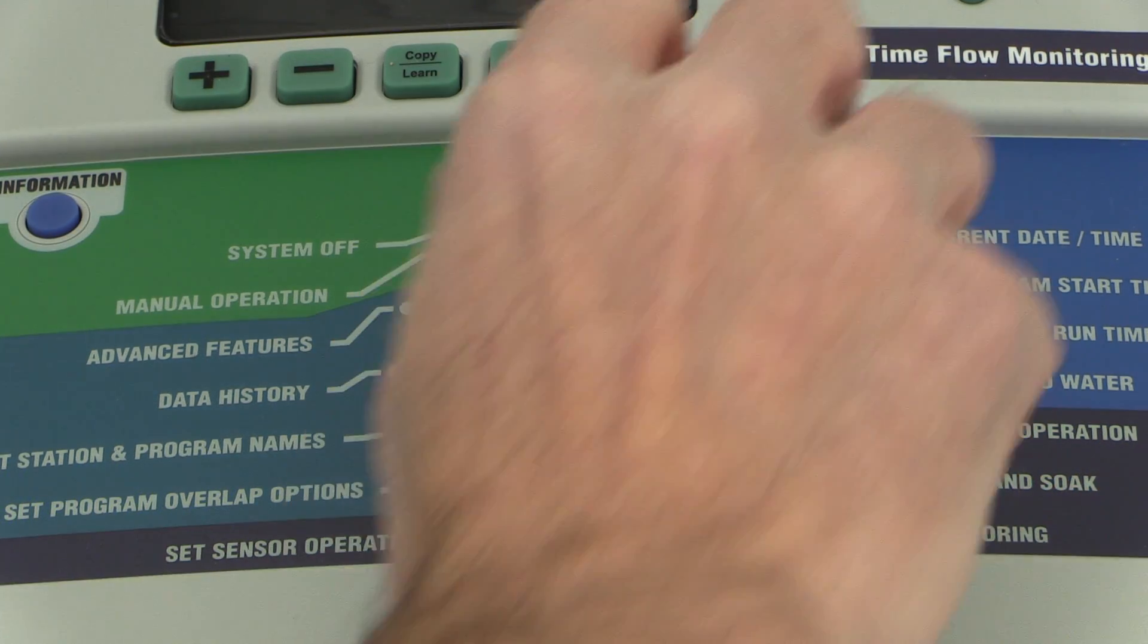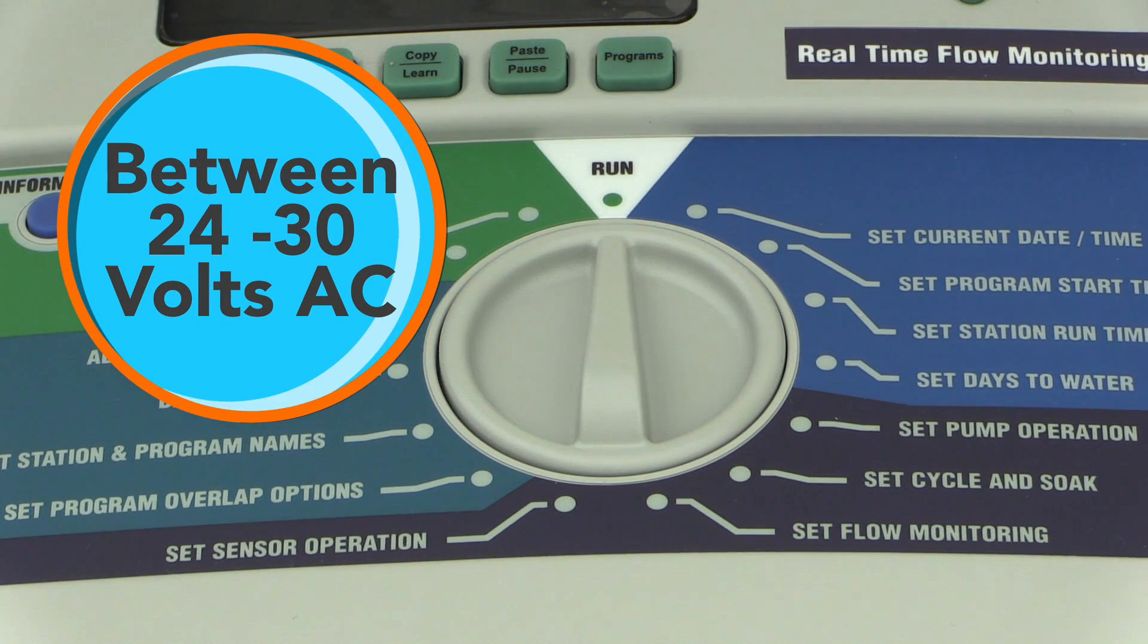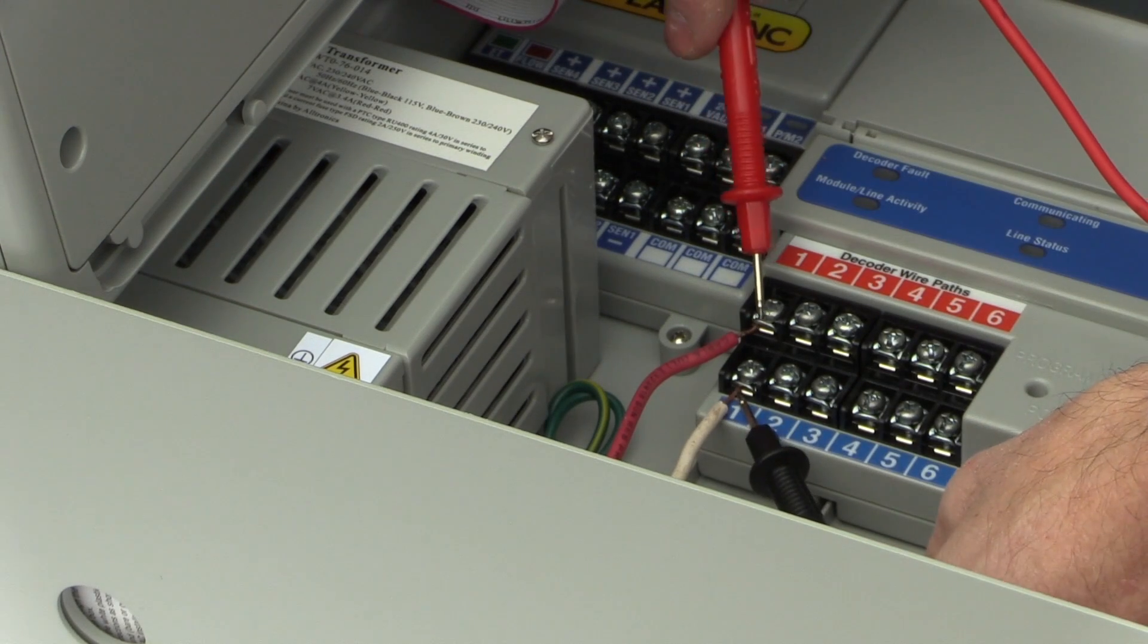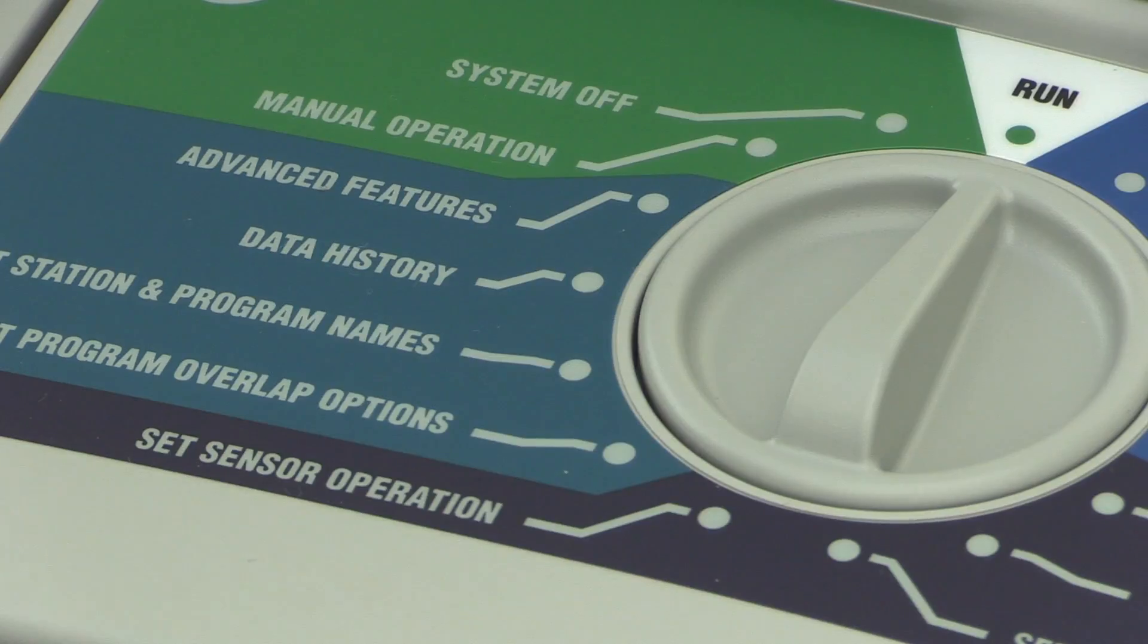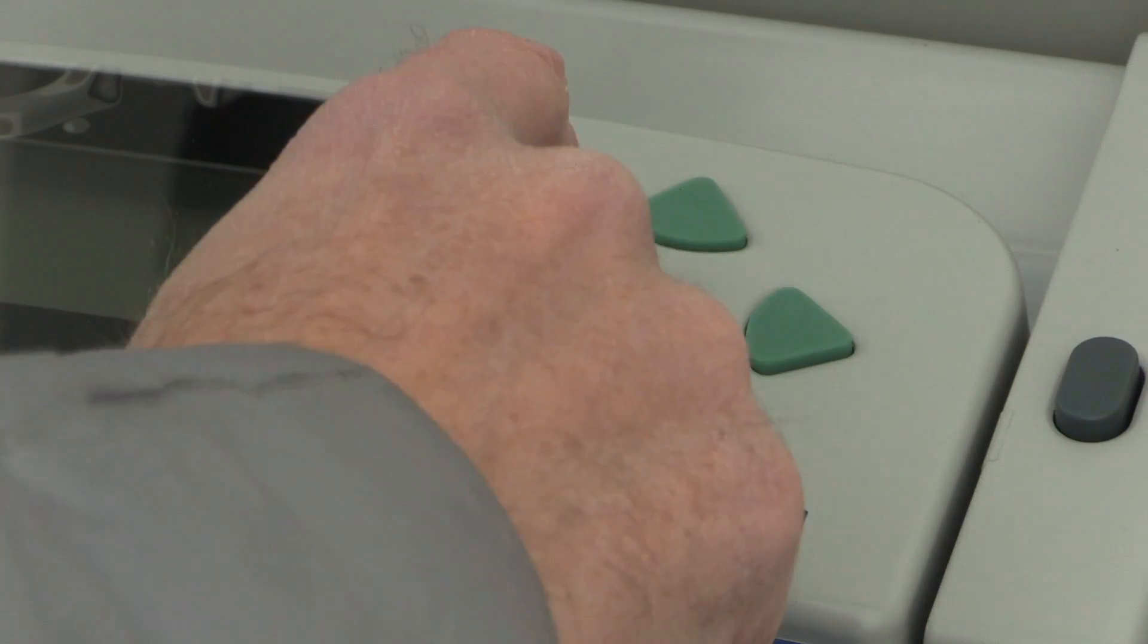With the system in run mode, the two wire paths should be energized with between 24 and 30 volts AC. You can read this output with the standard volt setting and the test probes. We will also assume you have eliminated any programming issues including setting up proper addresses for decoders at the main controller.